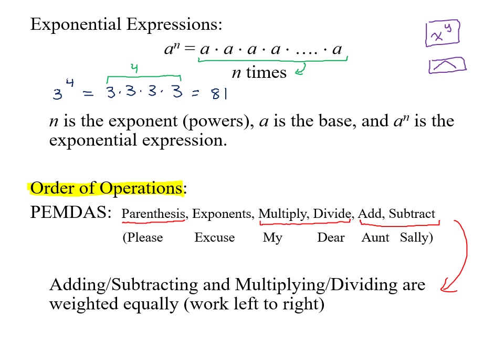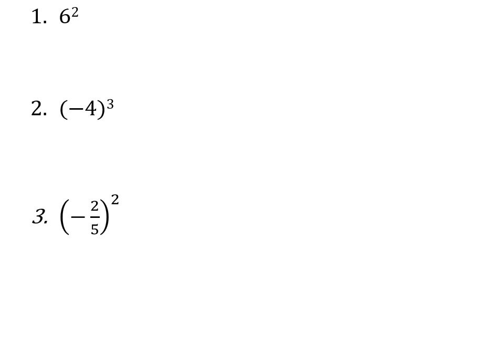Any scientific calculator nowadays does order of operations automatically. If your calculator is from the nineties or early 2000s, it may not — but any modern one will handle order of operations for you. For example, six squared: the calculator has a button for this, but it means six times six, which is thirty-six.